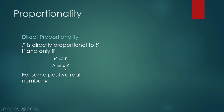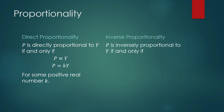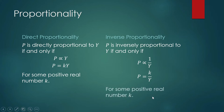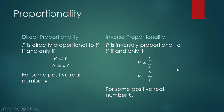Inverse proportionality: P is inversely proportional to Y if and only if P is equal to K over Y for some scalar number K. You already have some understanding of what this means. For direct proportionality, when Y increases, P also increases. But for inverse proportionality, Y is in the denominator — when Y increases and K is constant, the quotient decreases. When one is gaining in measure, the other is decreasing in measure.